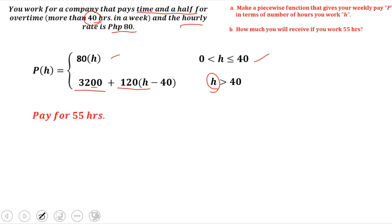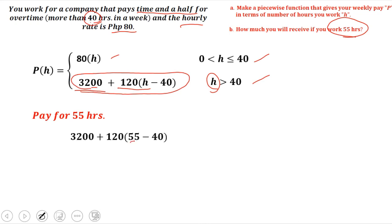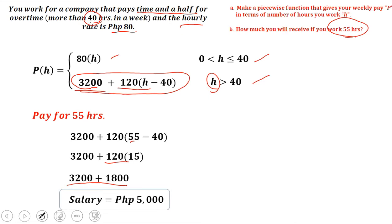For the second part of the problem, how much will you receive if you work 55 hours? So H equals 55. Since 55 is greater than 40, we use the overtime equation. So H is 55, and 55 minus 40 equals 15. Then 15 times 120 equals 1,800. Then we add: 3,200 plus 1,800, so your weekly pay if you work 55 hours is 5,000 pesos.